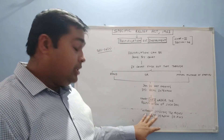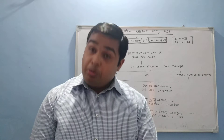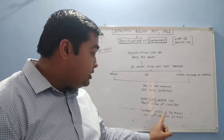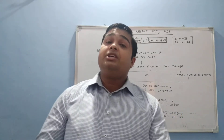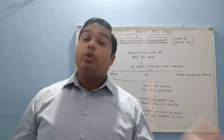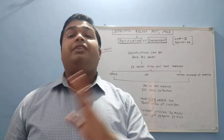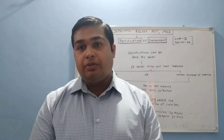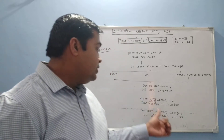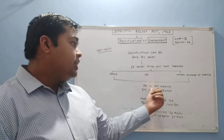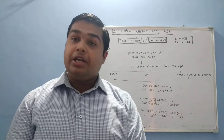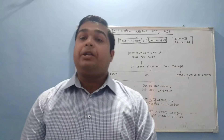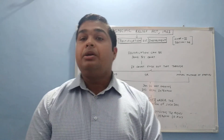There is another important condition: the court may order the rectification of such document but without affecting the rights of a third person, if any. If a third person has already acquired a right, then the court will not affect that right. The court, without affecting the rights of a third party, may order rectification of such document if the document is not showing its real intention due to fraud or mutual mistake of any party.